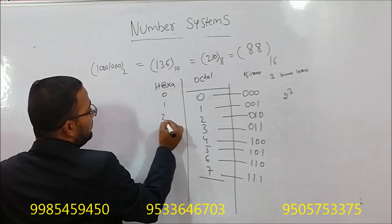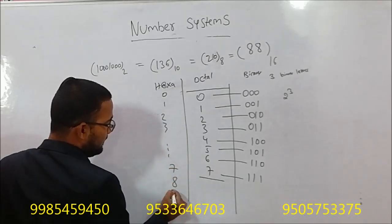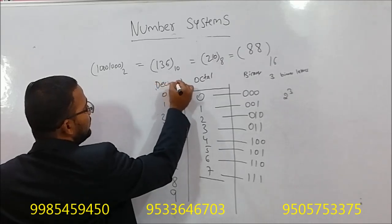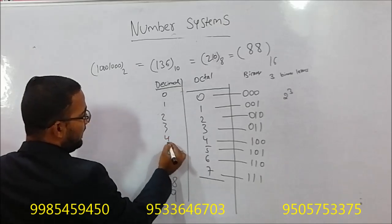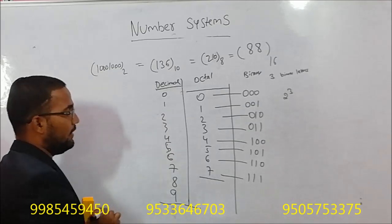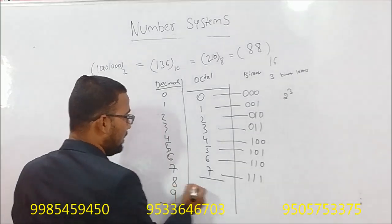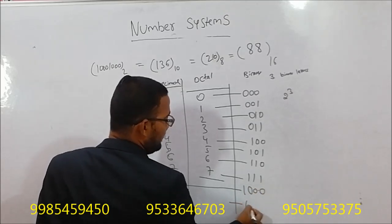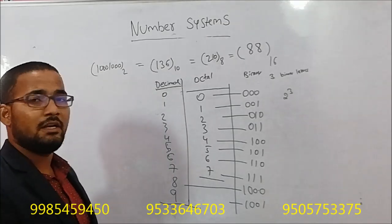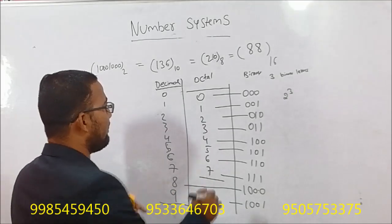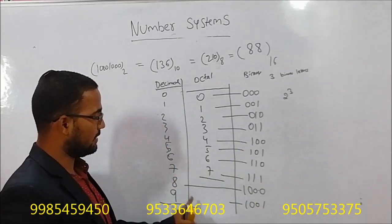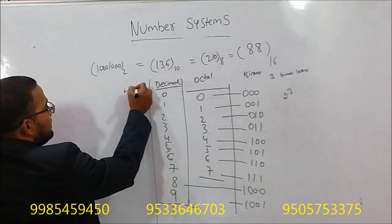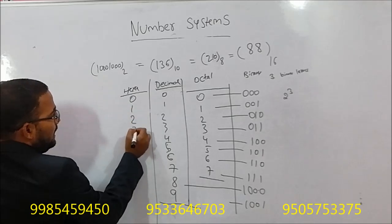So for example, the decimal values are 0, 1, 2, 3, 4, 5, 6, 7, 8, 9 — so 9 decimal values up to that point.